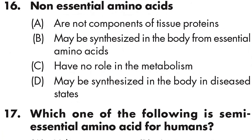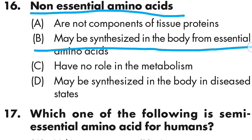Question number sixteen: non-essential amino acids — Option A are not components of tissue proteins, Option B may be synthesized in the body from essential amino acids, Option C have no role in metabolism, Option D may be synthesized in the body only in a diseased state. Option B is correct — non-essential amino acids may be synthesized in the body from essential amino acids.